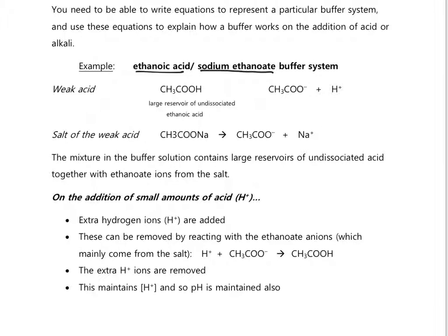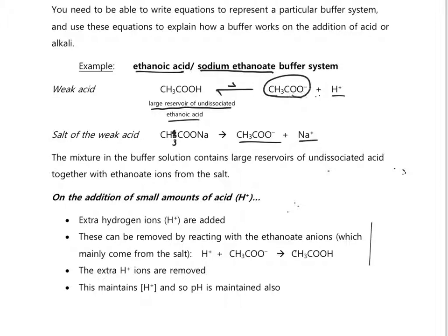With the weak acid, it only partially dissociates into its ions, producing some ethanoate ions and some hydrogen ions, but most of it remains undissociated — we call it a large reservoir of undissociated ethanoic acid. The salt of the weak acid, sodium ethanoate, will fully dissociate in solution to give ethanoate ions and sodium ions. Most of the ethanoate ions come from the sodium ethanoate.